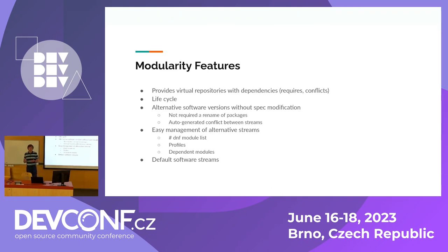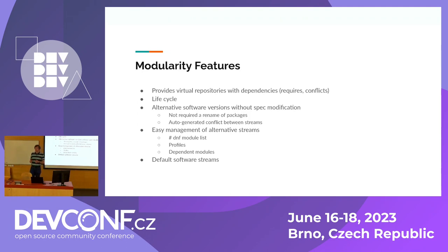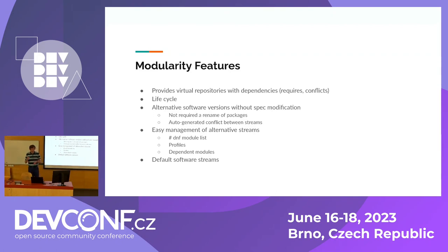Another feature is that it allows you to create alternative content without modifying a spec, because it will not change the name of the RPMs. Modularity is not required to create conflicts — modularity creates conflicts for you and hides everything that could conflict with your packages. There's also better user experience with alternatives: you can list alternatives, pick what you want to install, choose profiles, and build dependent modules on top of existing ones. The last feature is default software streams, which is quite important because not all features are available for all alternatives.